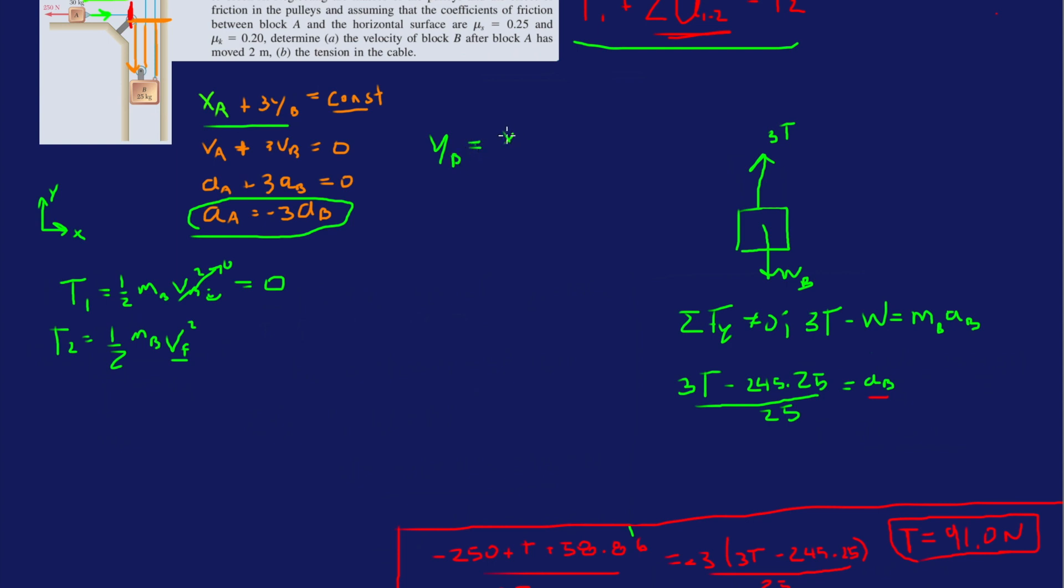So we know A has moved two meters from this equation. We know that YB, let's just talk magnitudes here. So YB is whatever A moves divided by three. So if A moves two meters, then YB is going to move up two-thirds of a meter.